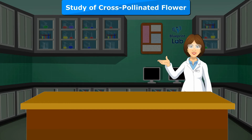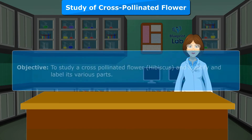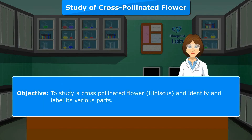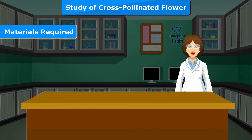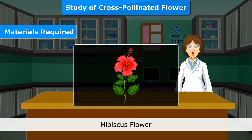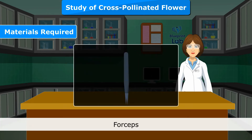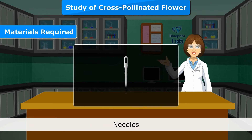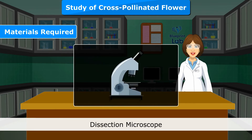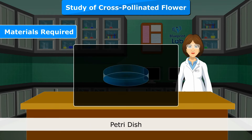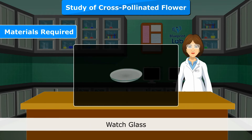Experiment 2 — Objective: To study a cross-pollinated flower, hibiscus, and identify and label its various parts. Materials Required: Hibiscus flower, forceps, needles, razor, slide, dissection microscope, Petri dish, watch glass, etc.